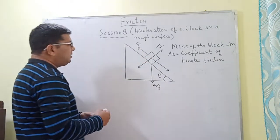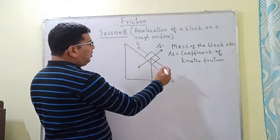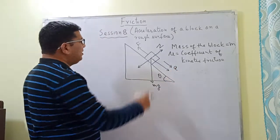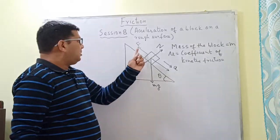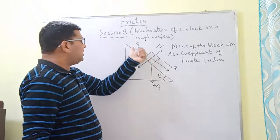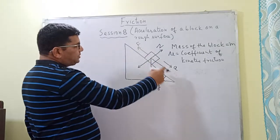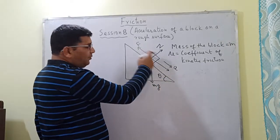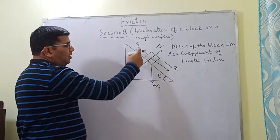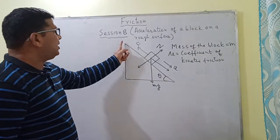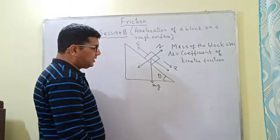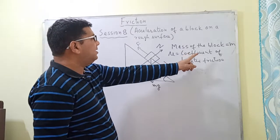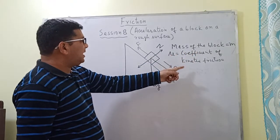Here I have taken a similar case, but the block is moving in the downward direction with an acceleration a, in spite of the external force F acting in the upward direction along the inclined plane. Even after the application of this force, the block is moving downward. We need to find the net acceleration. The mass of the block is m and the coefficient of kinetic friction is mu.